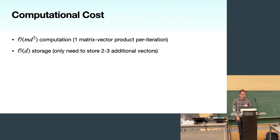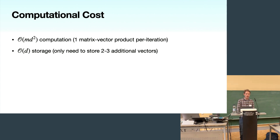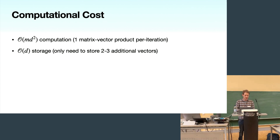In terms of computational cost, CG is only O(MD²), since we do one matrix-vector product per iteration over M iterations. If A is sparse, this cost is even lower. Clearly, if we can stop the algorithm before D iterations and achieve small error, we win compared to Cholesky. In terms of storage, CG is only O(D) — it can be implemented in a matrix-free way, storing just two or three additional vectors.